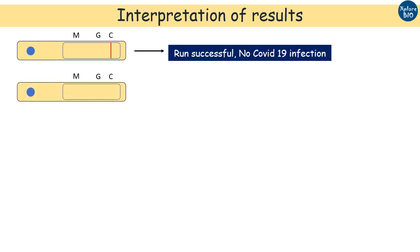If no line appears in the C, it means the test is unsuccessful and needs to be repeated.